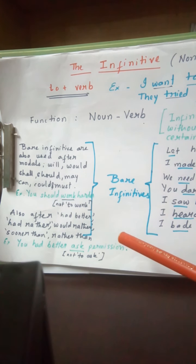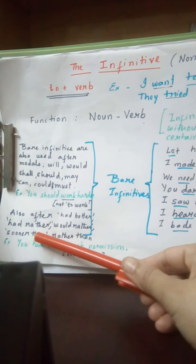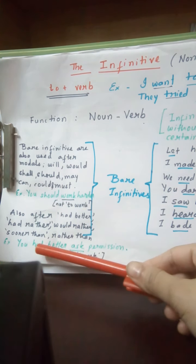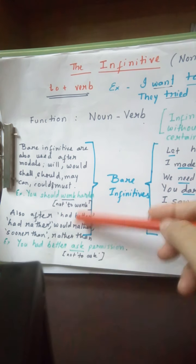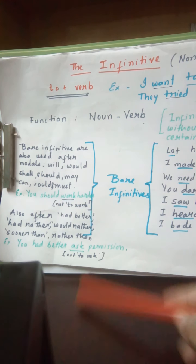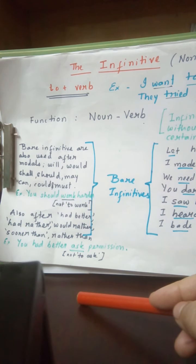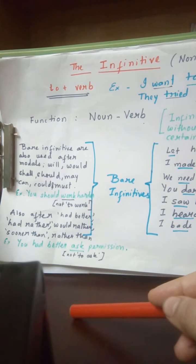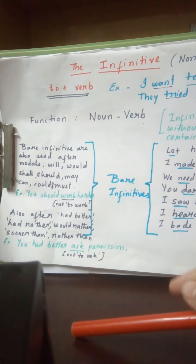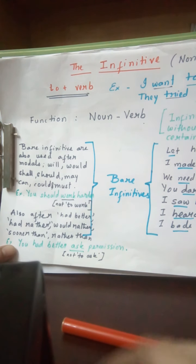There are also other expressions with which we use bare infinitives instead of 'to' infinitives: 'had better,' 'had rather,' 'would rather,' 'sooner than,' 'rather than.' With these expressions, we do not use 'to.' For example, 'you had better ask permission' — not 'you had better to ask permission.' It means it is better that you ask permission rather than going without permission.